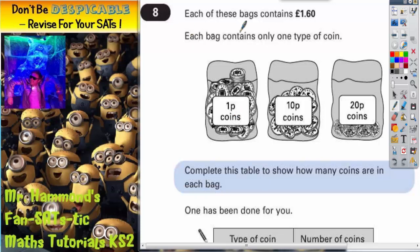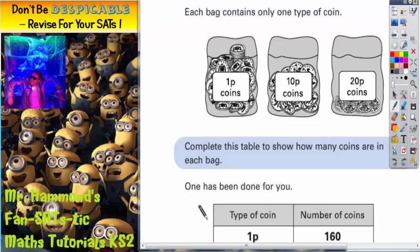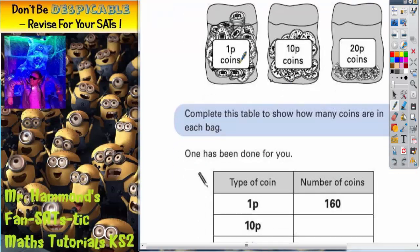Question 8: Each of these bags contains one pound sixty. Each bag contains only one type of coin. So we've got a bag of coins that makes one pound sixty in one pences. Well, how many one pences would it take to make one pound sixty? You would need one hundred and sixty of these.